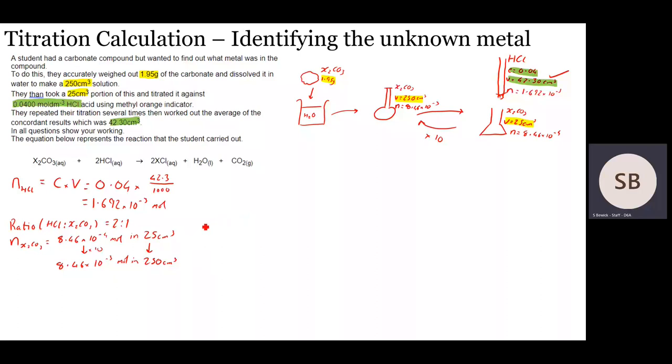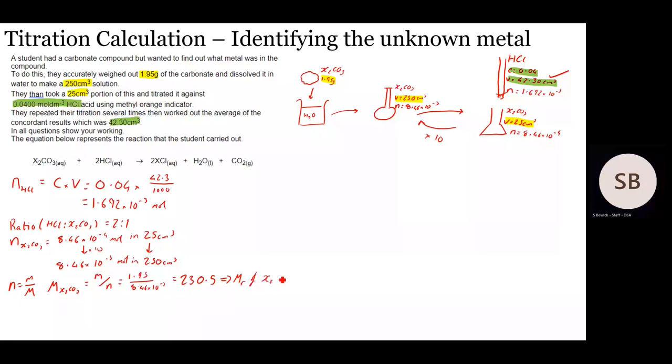Now we can start the fun bit. We know that our mass of X2CO3 was 1.95 grams. We know that that made 8.46 times 10 to the minus 3 moles. So we can think, if we know that number of moles equals mass divided by molar mass, we can rearrange that. So the molar mass of X2CO3 is going to equal mass divided by number of moles. So 1.95 divided by 8.46 times 10 to the minus 3. And that comes out as 230.5. So that is the molar mass of X2CO3.